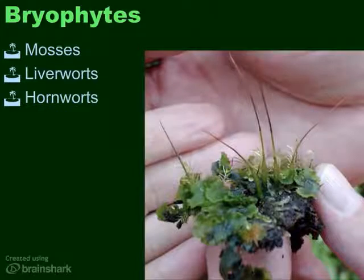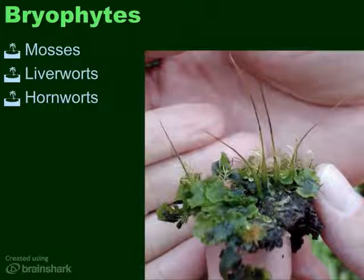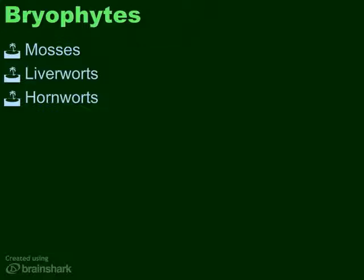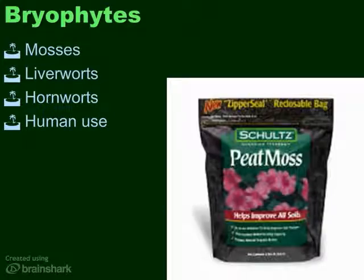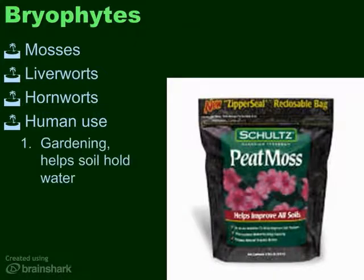Lastly are the hornworts, so named because of their little horns that are the sporophyte stage. The gametophyte stage is what looks kind of leafy. Mosses are also used by humans quite a bit, especially those who are into gardening. There's a type of moss called sphagnum — it's very plentiful, and when it's dried out and bagged, it's extremely helpful in keeping moisture in the soil. It also helps lower the pH of soil, making it more acidic, which is important if you're trying to grow certain plants like azaleas, since they like acidic soil.